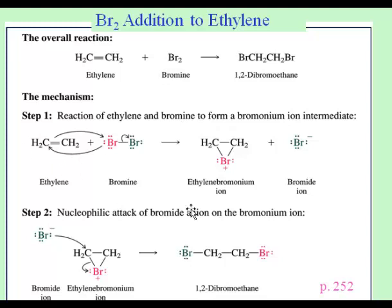We're not operating on a ring right here, so we would predict the correct product even without knowing all the details of the mechanism. But it does show that the bromines don't add at the same time, even though they both end up on the molecule we start with. It also shows why the bromines end up on different carbons. Again, if this were a ring compound we were starting with, this would lead us to a trans isomer.